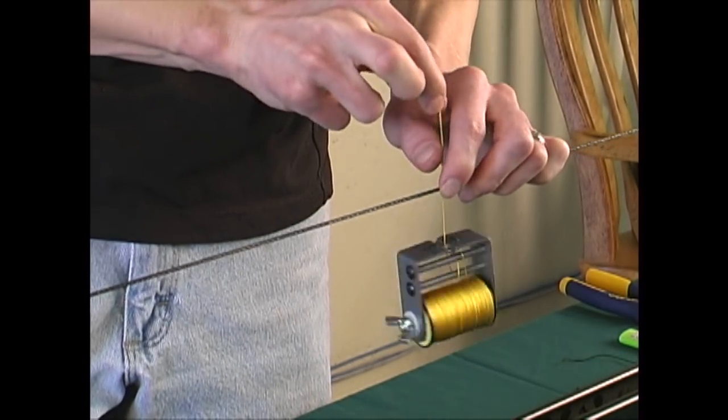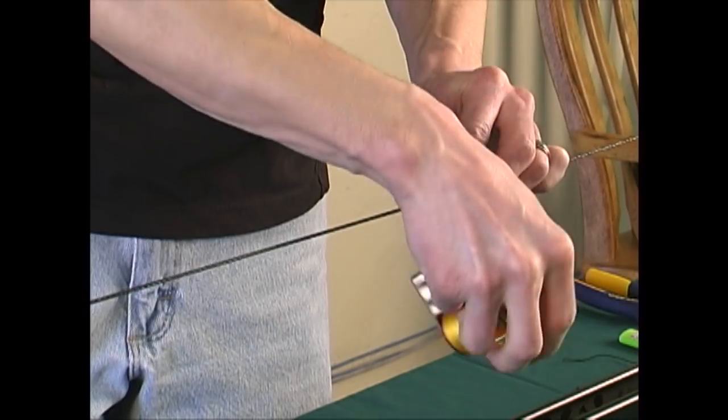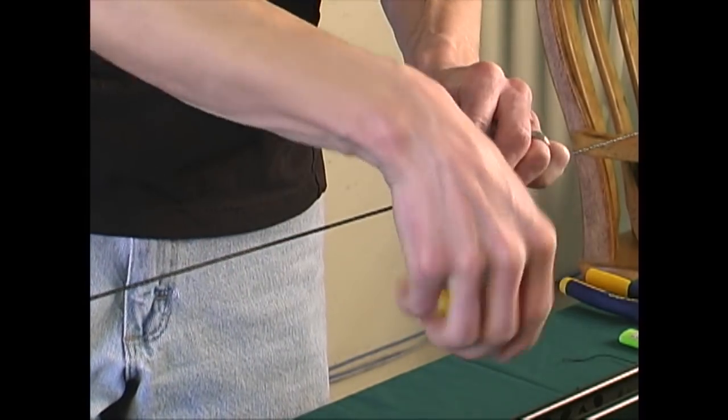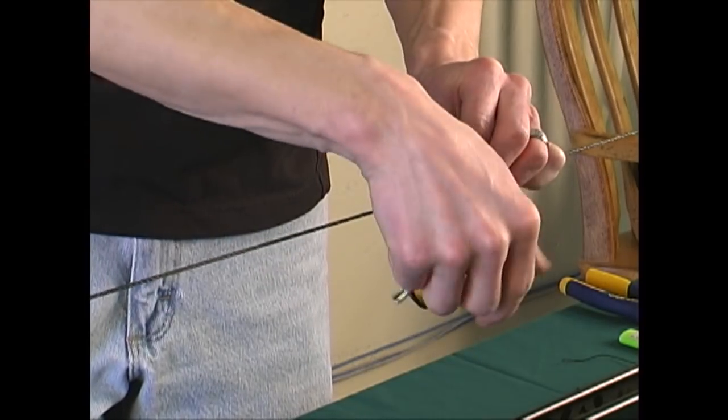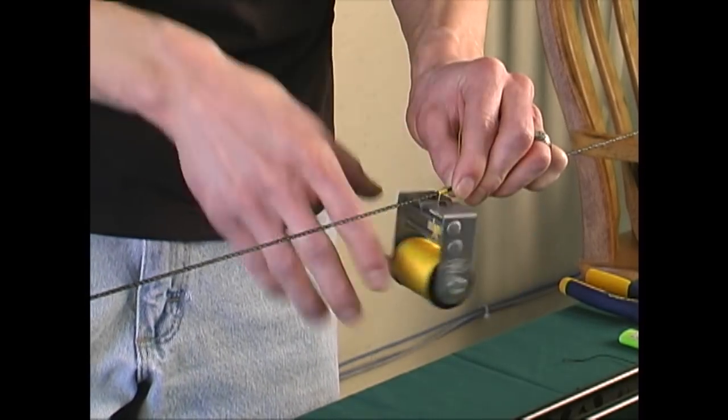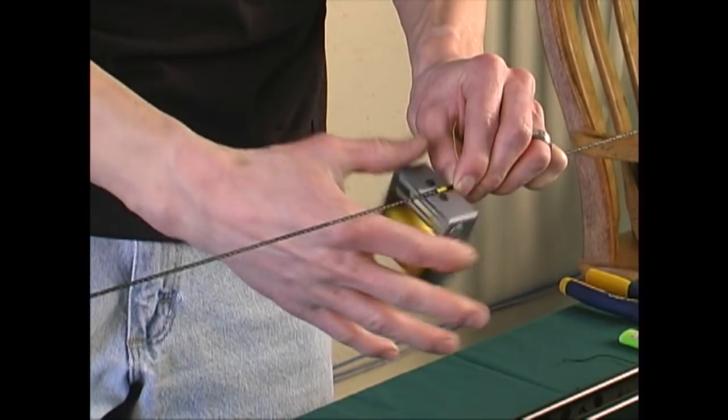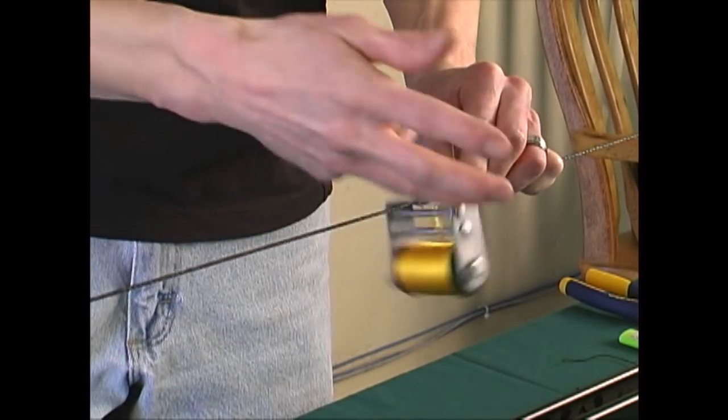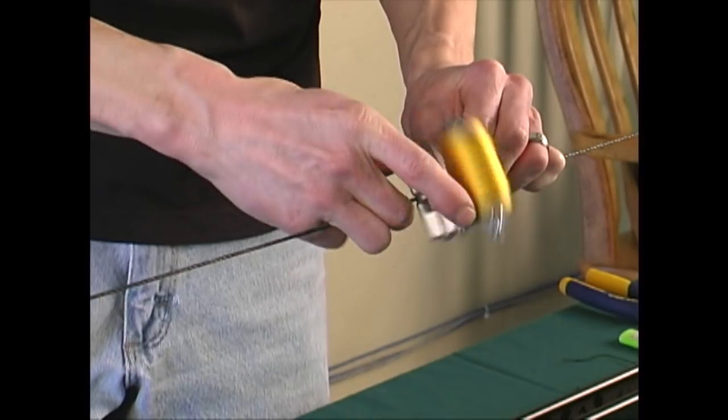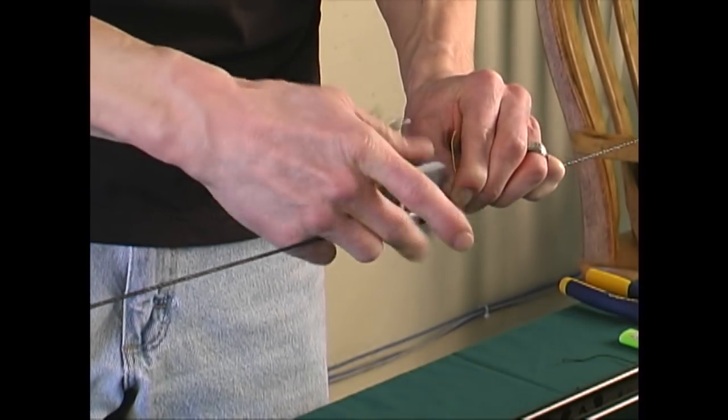You'll want to go 6 or 8 twists minimum before you pull the tag end up and start serving directly to the string. At this point, cut out all the slack in the serving so that you can start to twist the serving jig by itself. Now you should be able to flow the serving onto the string until you get to the end point.